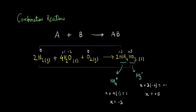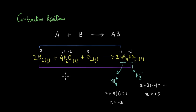Looking at the change in oxidation numbers, nitrogen in one case goes from zero to minus three and also from zero to plus five. Because there is both oxidation and reduction happening, this is a redox reaction. But can we say all combination reactions are redox reactions? Not necessarily, because there is a possibility that a combination reaction happens without any change in oxidation numbers.